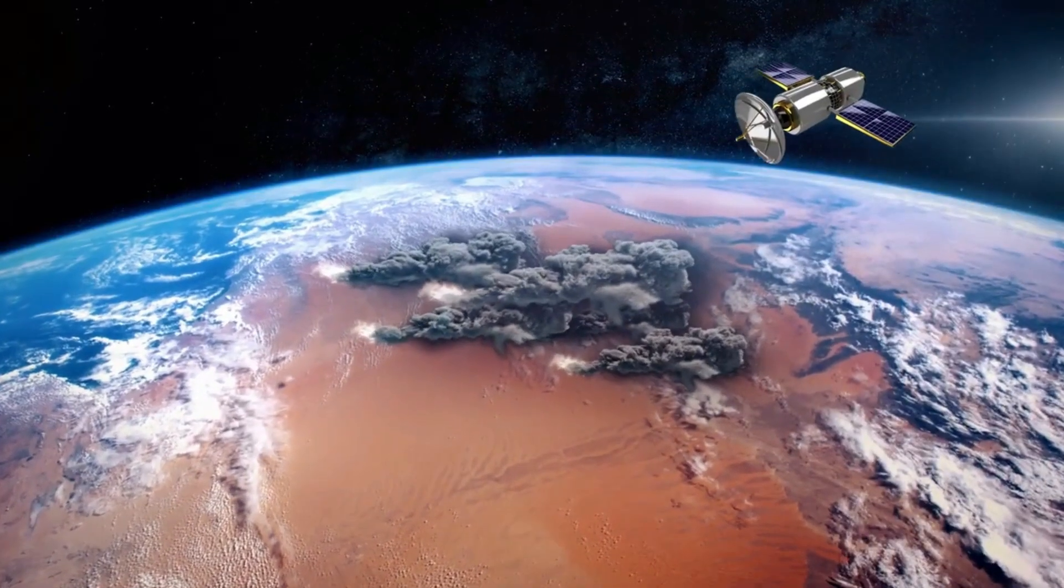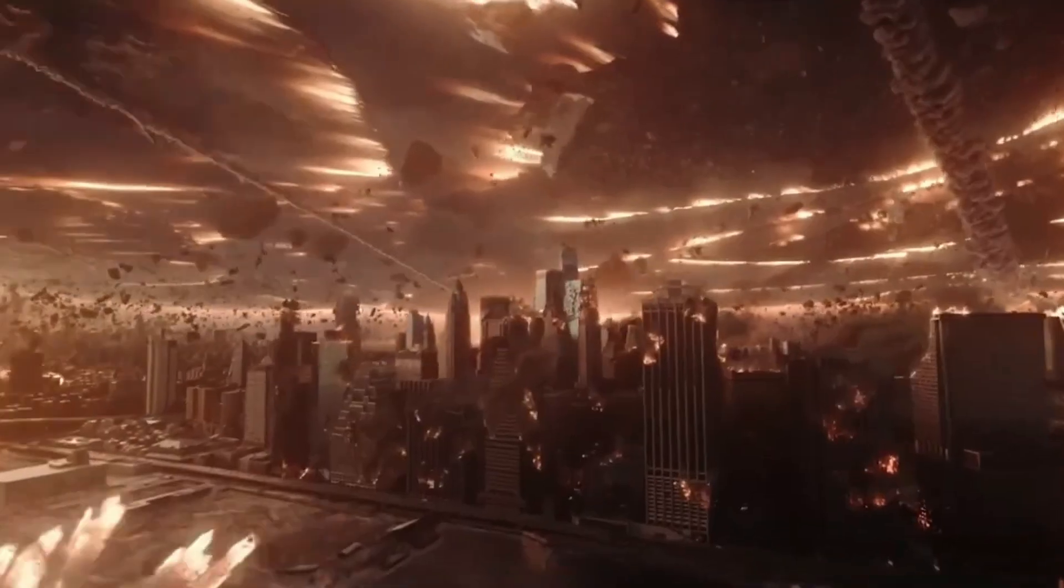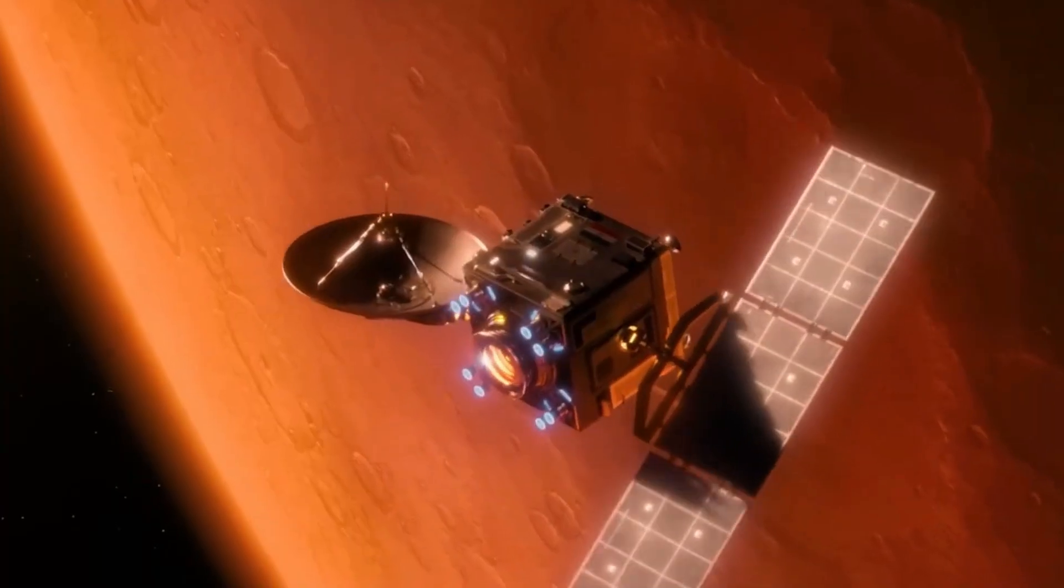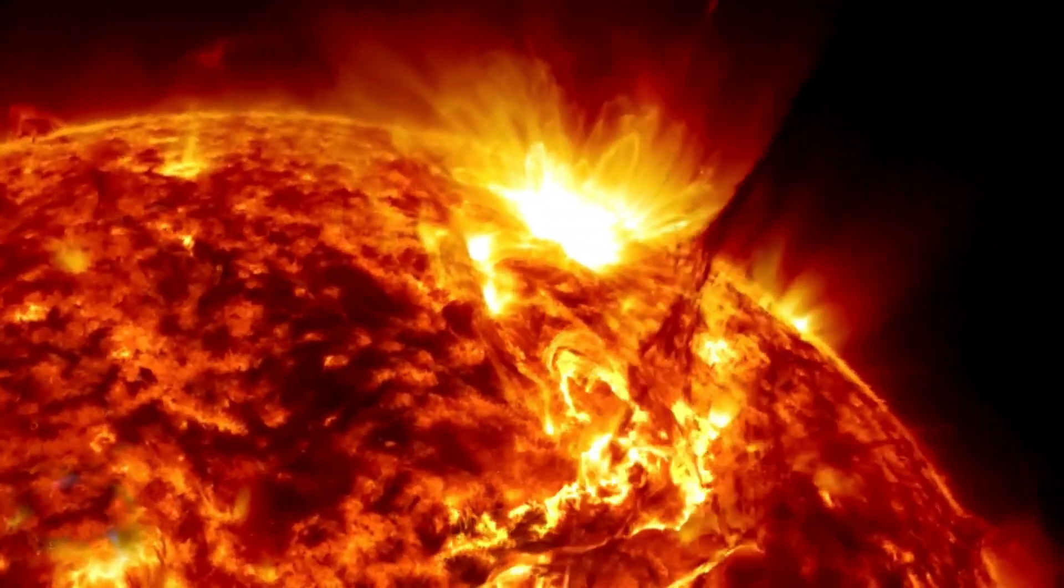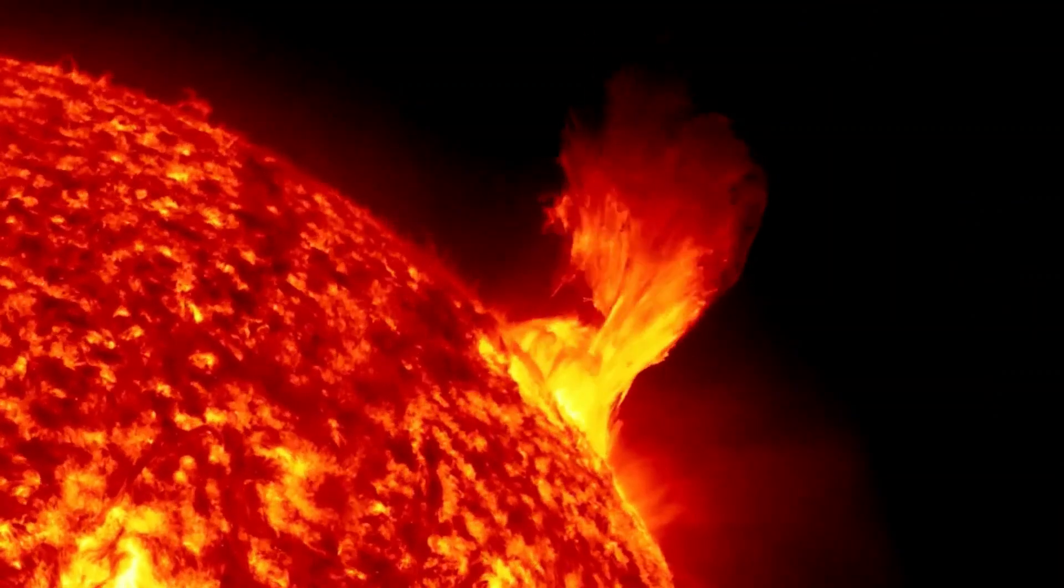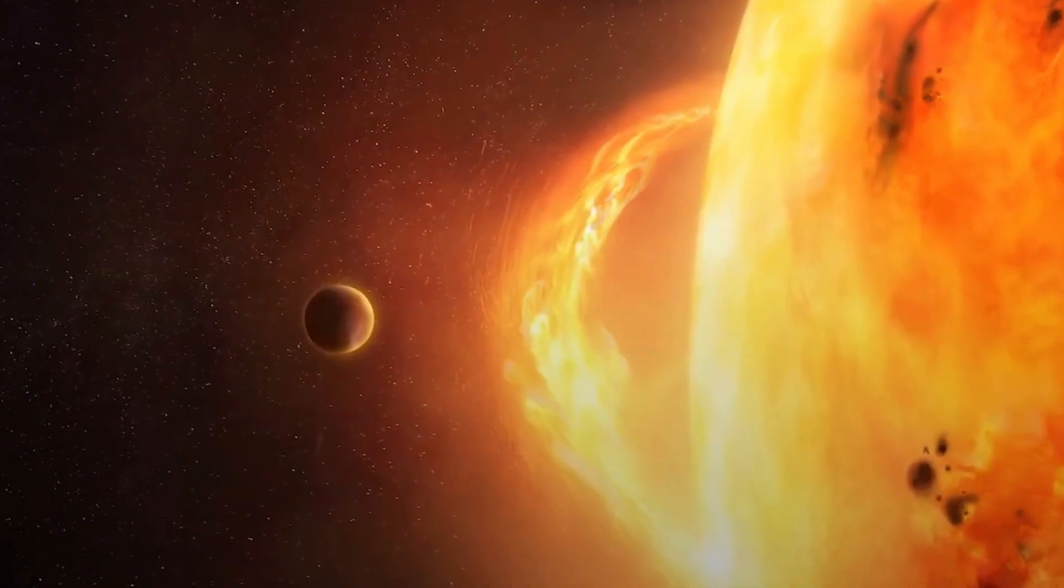Equally important is the development of sophisticated early warning systems. Leveraging a network of solar observatories and satellites, such as the Solar Dynamics Observatory and the SOHO spacecraft, we can monitor the sun's activity in real time. This vigilance allows us to predict significant solar events, providing precious lead time to secure vulnerable systems on Earth.